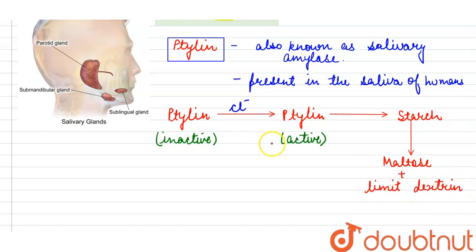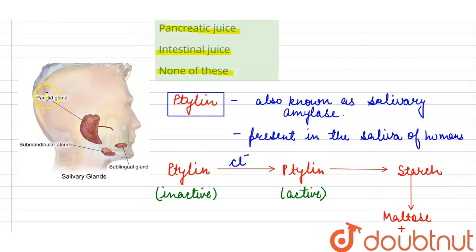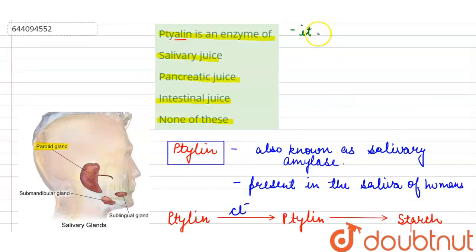So this is the function of ptyalin. Now there are three pairs of salivary glands present in the mouth of humans, and out of which ptyalin is secreted by the largest gland, that is the parotid gland.